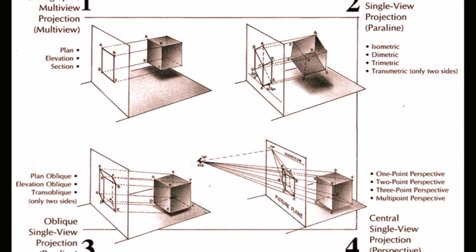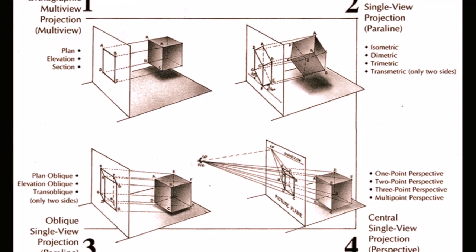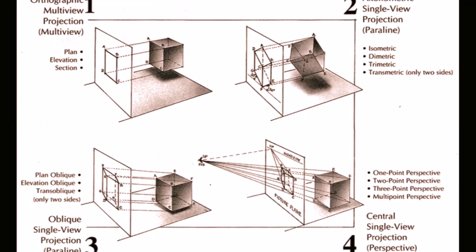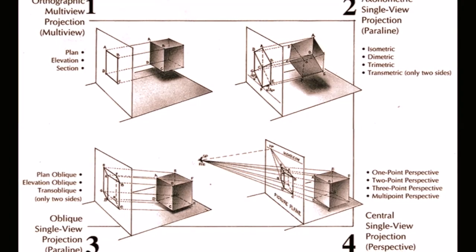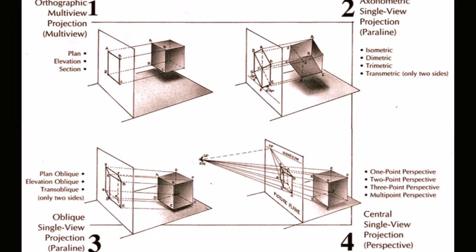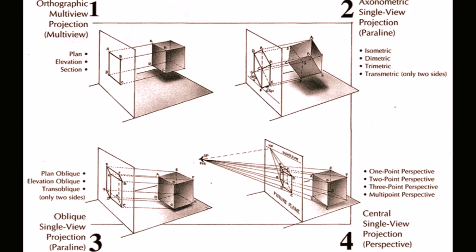Perspective in the graphic arts is an approximate representation, generally on a flat surface, such as paper, of an image as it is seen by the eye.